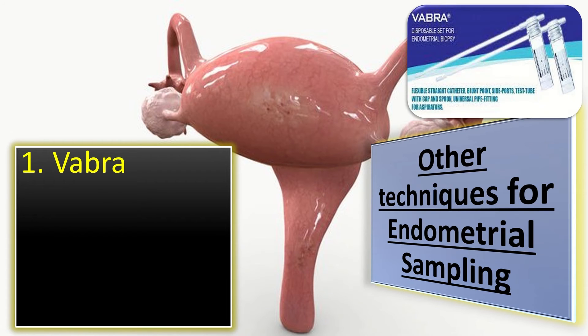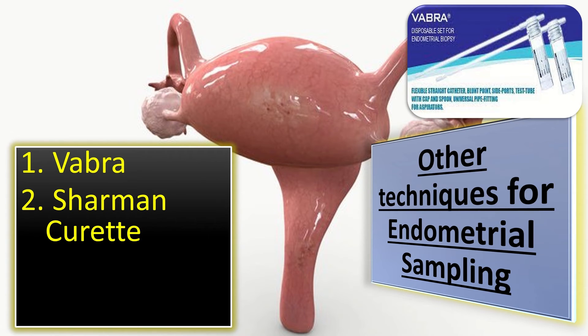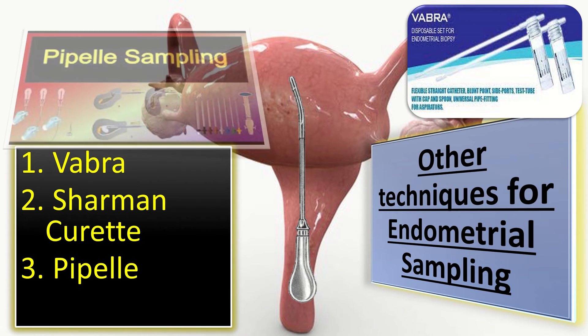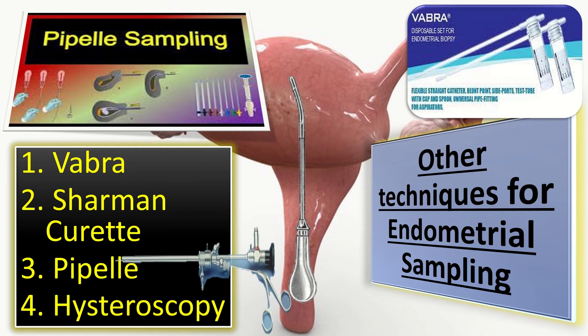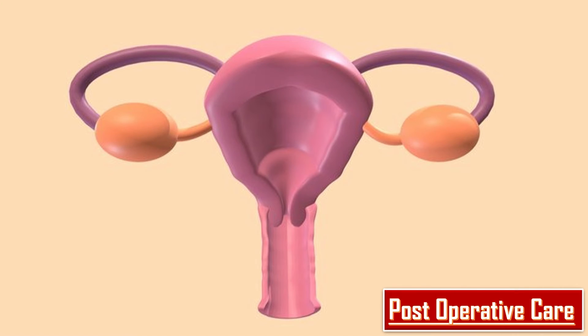Other techniques of endometrial sampling include Vabra aspirator, Sharman curette, Pipelle endometrial sampling, and hysteroscopy.